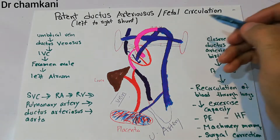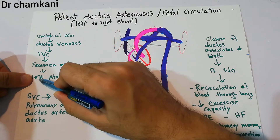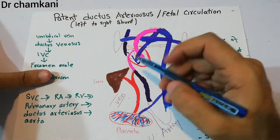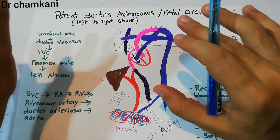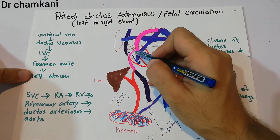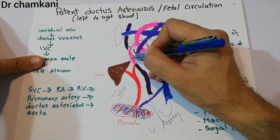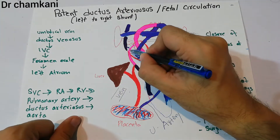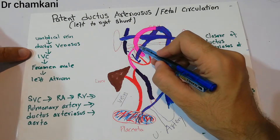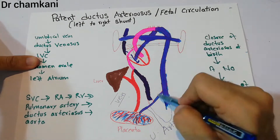Blood from the inferior vena cava enters the right atrium but, through the jet effect, passes directly through the foramen ovale into the left atrium. The foramen ovale is present before birth and obliterates after birth. This blood, which was initially very oxygenated but slightly mixed, goes from the left atrium into the left ventricle, and the left ventricle pumps it directly to the body.